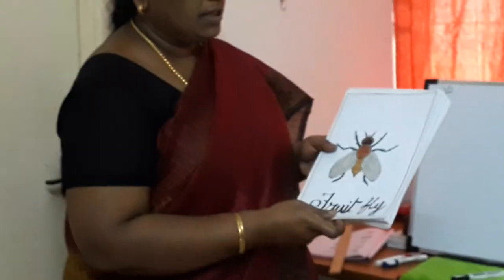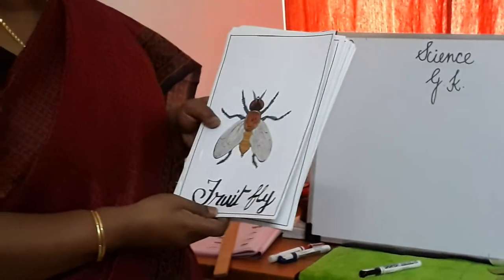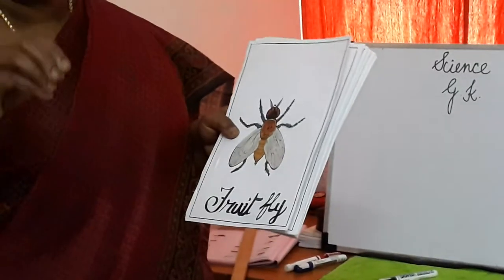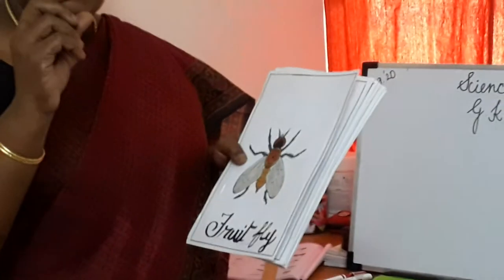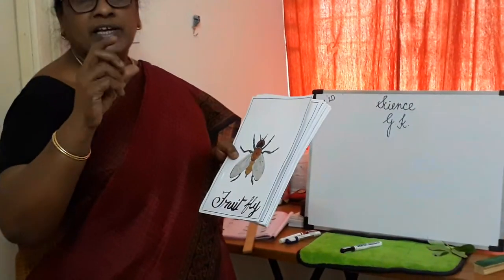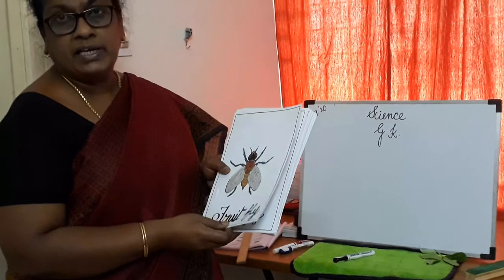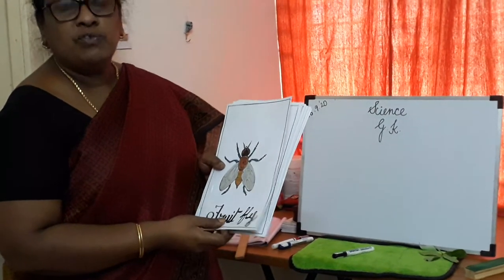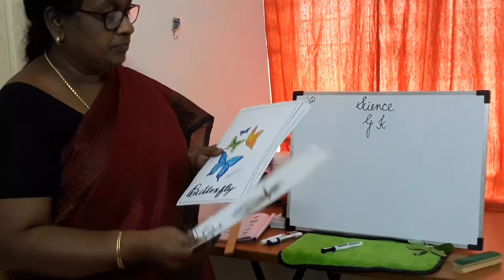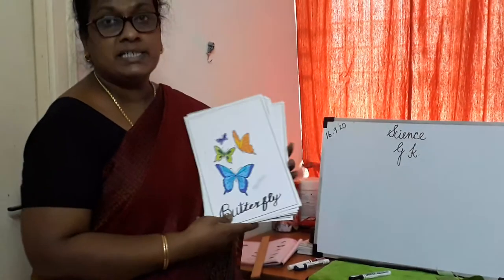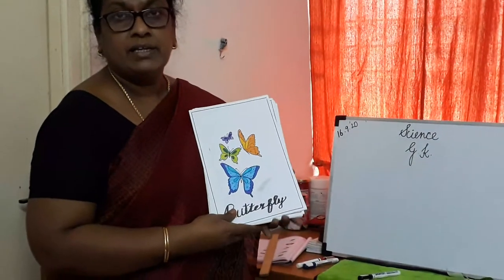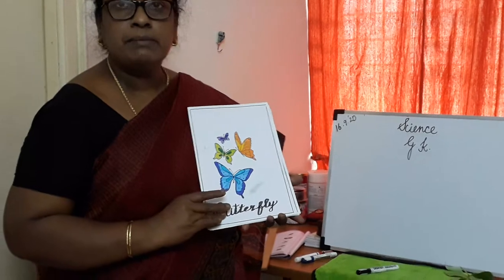Okay children. See, what is this? This is a fruit fly. What is this? Fruit fly. This is very beautiful — this is butterfly. You all know this. This is butterfly.